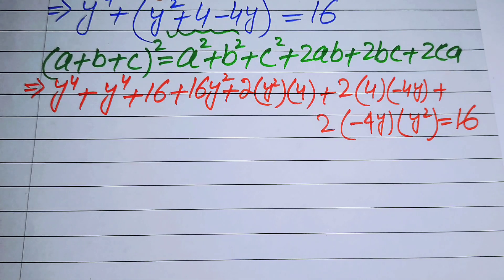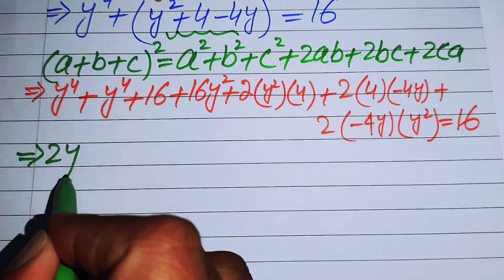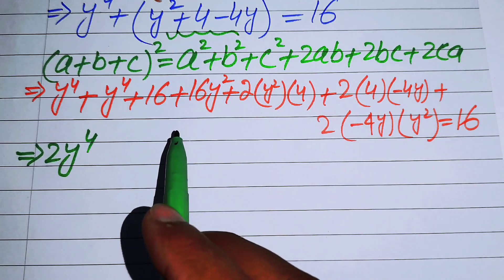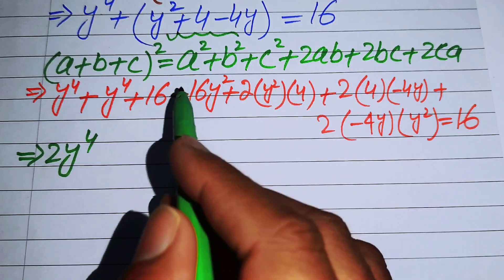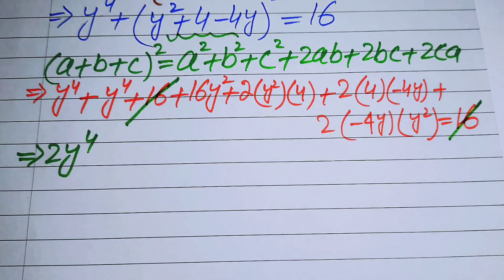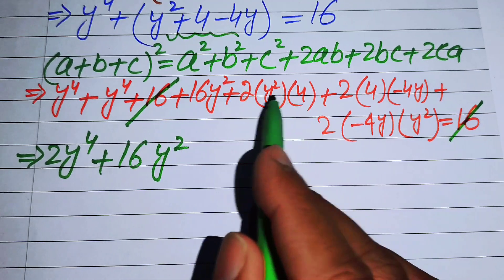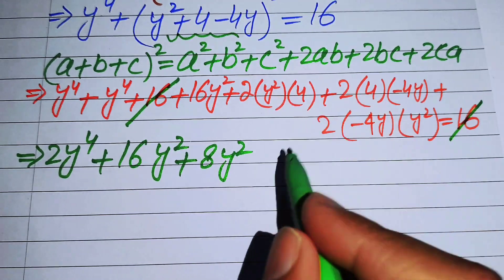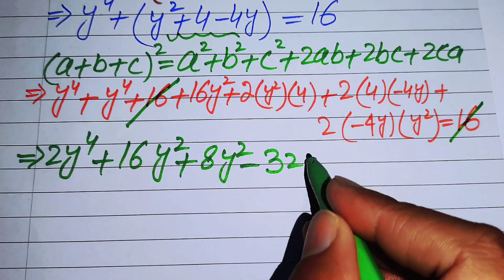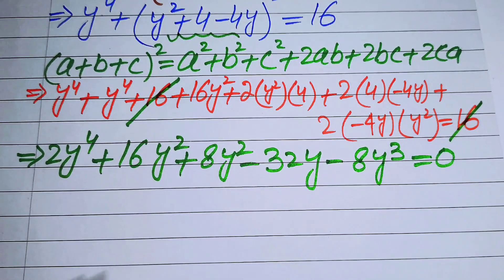Adding like terms: y^4 + y^4 = 2y^4. The +16 on the left cancels with the 16 on the right. We then have +16y^2 + 8y^2 = 24y^2, and 2 times (-32y) gives -32y, and -8y^3. This gives 2y^4 + 24y^2 - 32y - 8y^3 = 0.